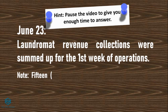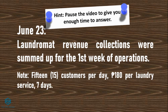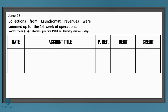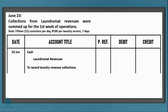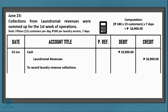On June 23, laundromat revenue collections were summed up for the first week of operations — 15 customers per day, 180 pesos per laundry service, for 7 days. Let's do the entry: put the date June 23. Since this is a cash revenue collection, we debit cash. Since it's revenue, check the chart of accounts — use 'Laundromat Revenues' as the credit. Don't forget the explanation. The total is 180 × 15 × 7 = 18,900 pesos under the debit and credit columns.